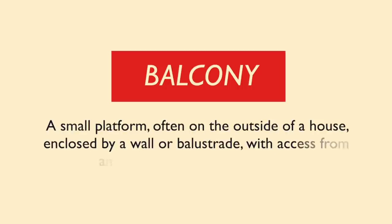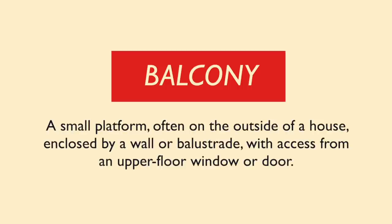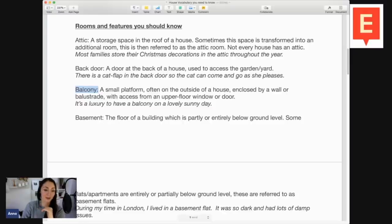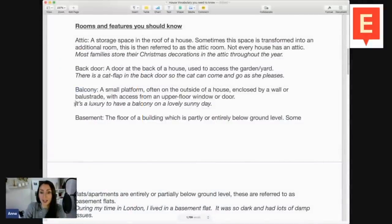Next on the list is balcony. A balcony is a small platform, often on the outside of a house, enclosed by a wall or a balustrade — which is like railings or metal bars — with access from an upper floor window or door. So it's raised up. Just think about Juliet — 'Romeo, Romeo, wherefore art thou, Romeo?' Juliet stood famously on her balcony. The example sentence is: it's a luxury to have a balcony on a lovely sunny day.